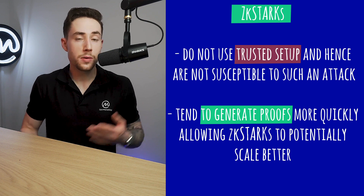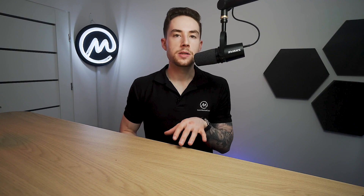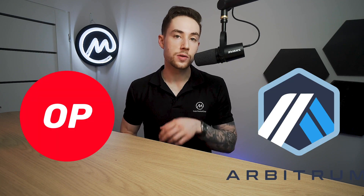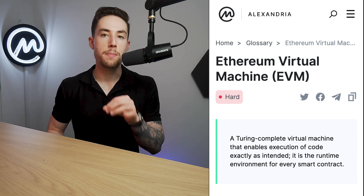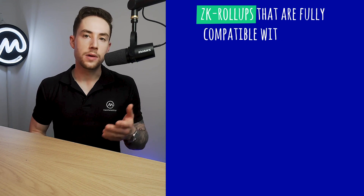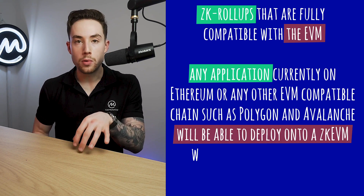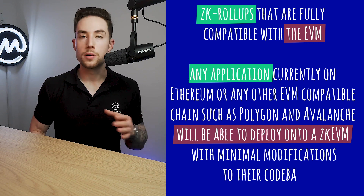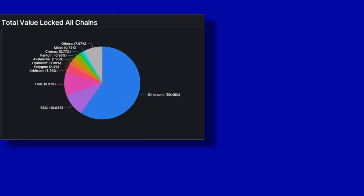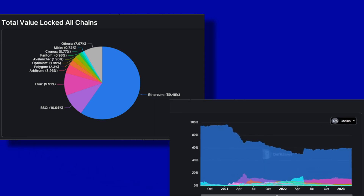There is no clear winner for now between the two, and both technologies are still being implemented in developing projects. As Optimistic Rollups like Arbitrum and Optimism took the lead in early 2023, ZK Rollups are slowly closing in on them. More specifically, it is the ZK Rollups that are Ethereum Virtual Machine, or EVM, compatible that the market is especially excited about. ZK EVMs refer to ZK Rollups that are fully compatible with the EVM, meaning any application currently on Ethereum or any other EVM compatible chain — such as Polygon and Avalanche — will be able to deploy onto a ZK EVM with minimal modifications to their code base. EVM compatibility has always been a highly sought-after trait for a new chain as a strategy to attract developers and users, as the majority of total value locked, or TVL, on-chain has always been on Ethereum, with the chain holding more than 50% of all TVL at any point.